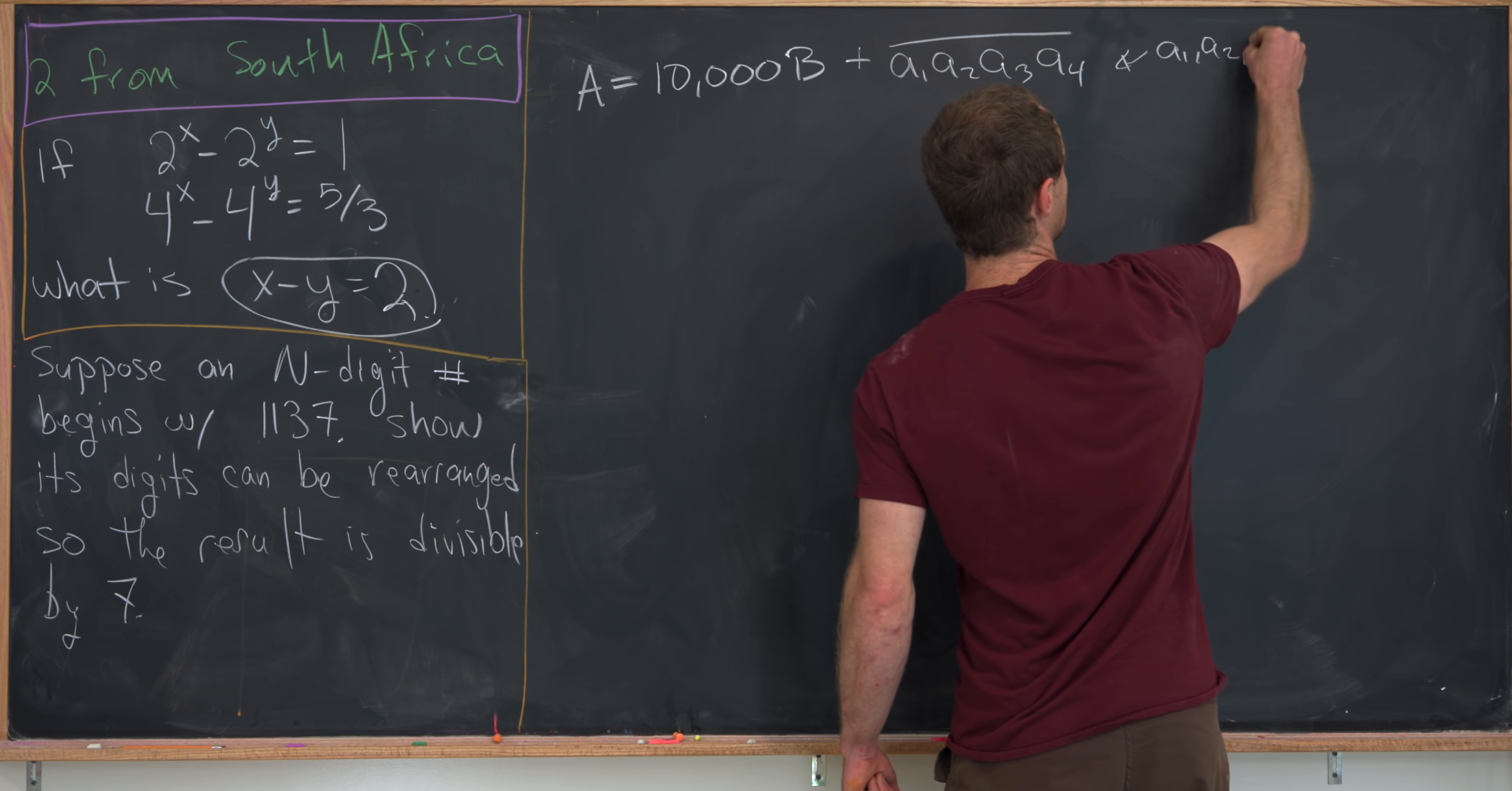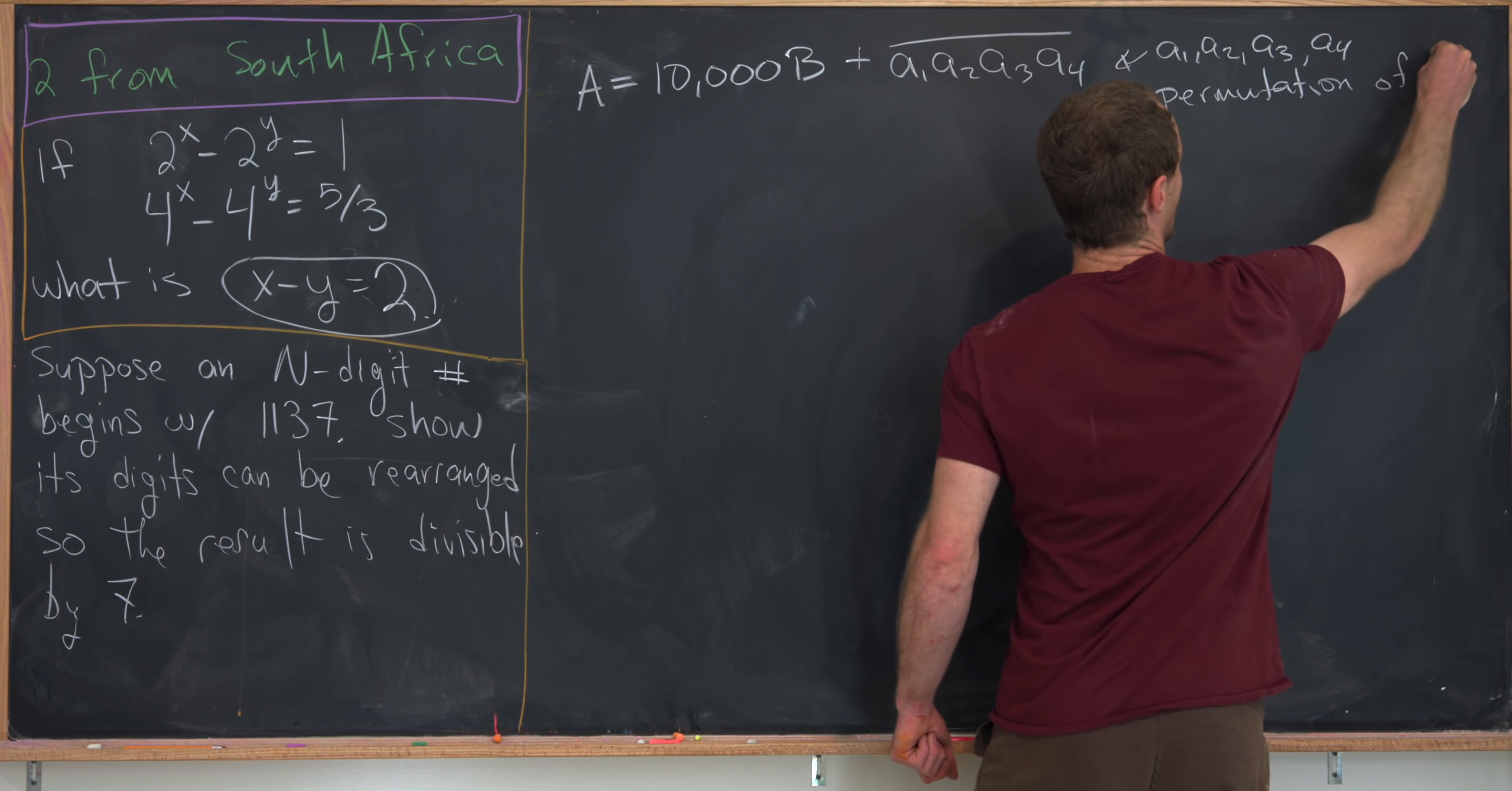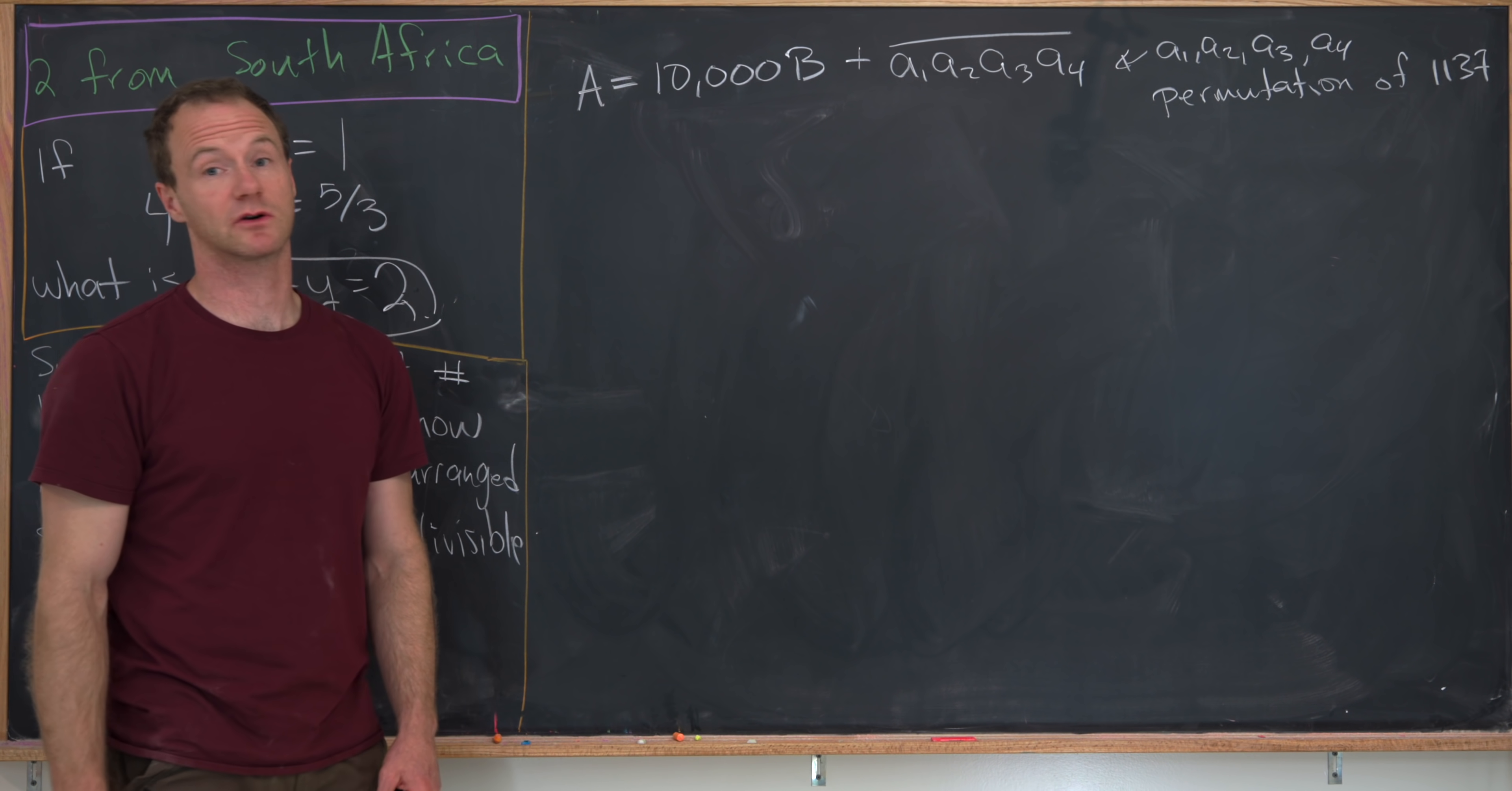this a1, a2, a3, and a4 is just a permutation of 1137.